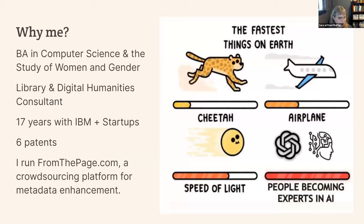So why me? I'm a techno-optimist, but I'm also a realist. I have a bachelor's degree in computer science, but I also have a degree in humanities and the study of women and gender, and I love reading and writing and thinking about technology. That's my sweet spot. I've been a digital humanities consultant for about seven years, and Ben and I do a lot of projects around digital editions, Triple IF, and we run From the Page.